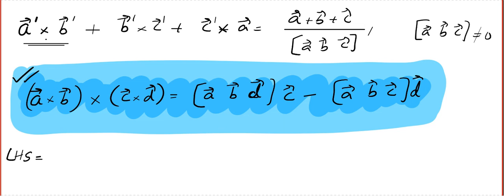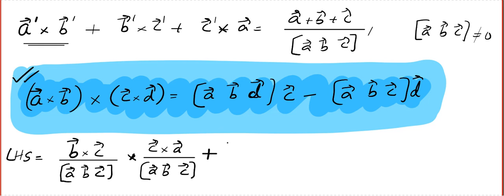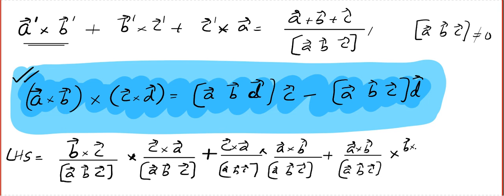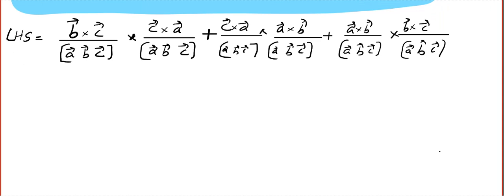Let us start with the left hand side. A dash cross B dash. A dash is B cross C divided by STP cross B dash, which will be C cross A divided by STP, plus C cross A divided by STP cross A cross B divided by STP, plus B cross C divided by STP cross A cross B divided by STP. Always remember the fact that this is a number.